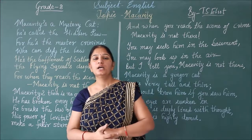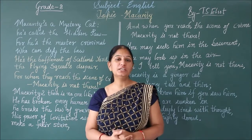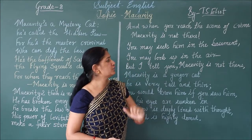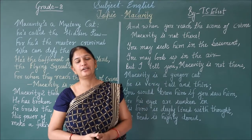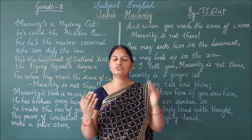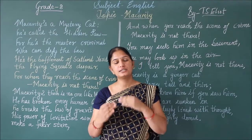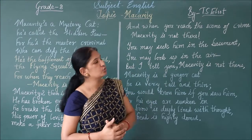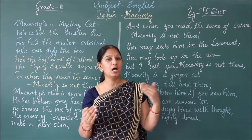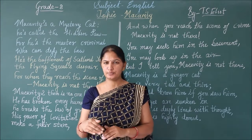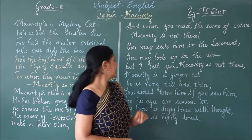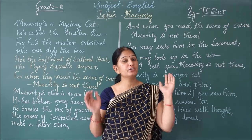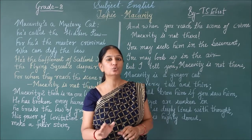Here 'fakir' is taken as magicians, so even magicians can be very confused after seeing his powers of levitation. And when you reach the scene of crime, McCavity is not there. You may see him in the basement or look up in the air — on the ground or in the air — but nowhere will you be able to find him. McCavity cannot be found after committing the crime; he does not even leave any clue at the scene.